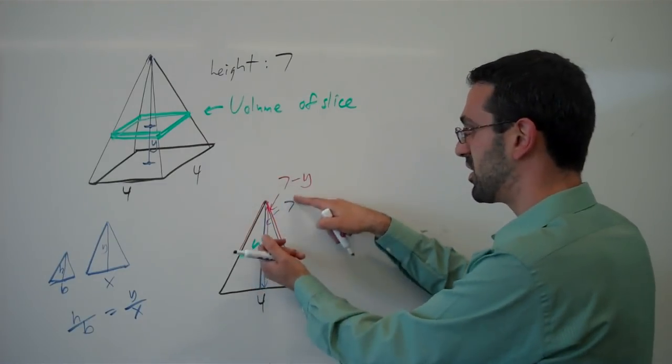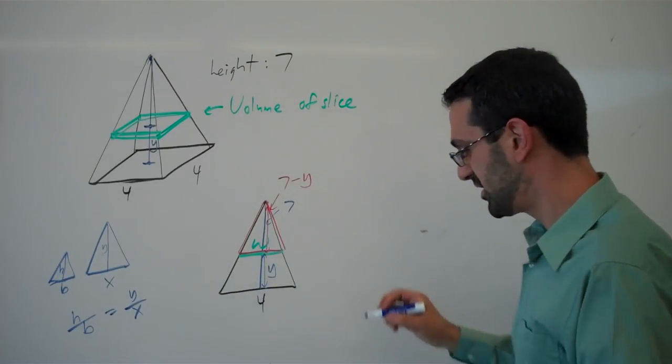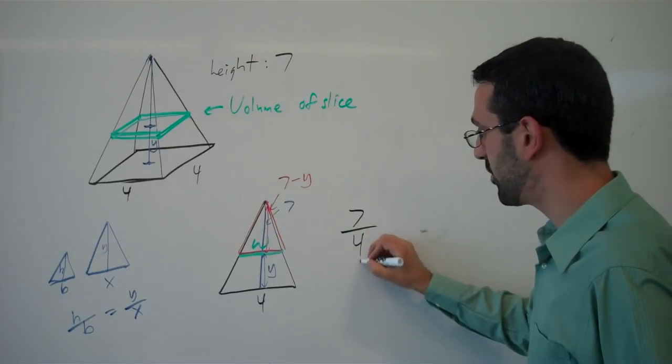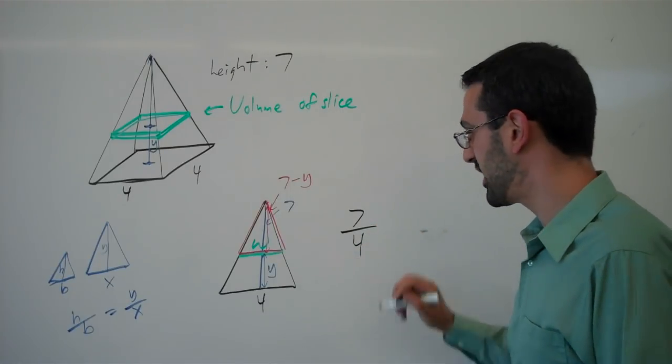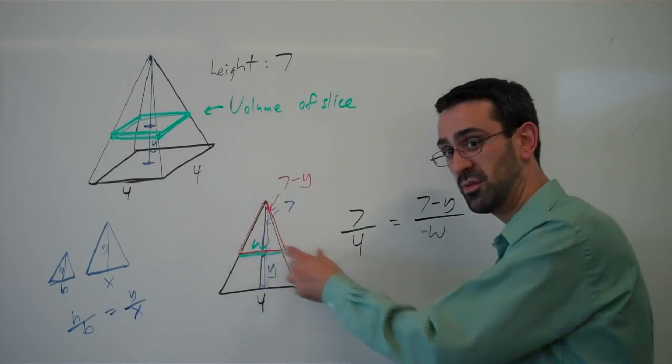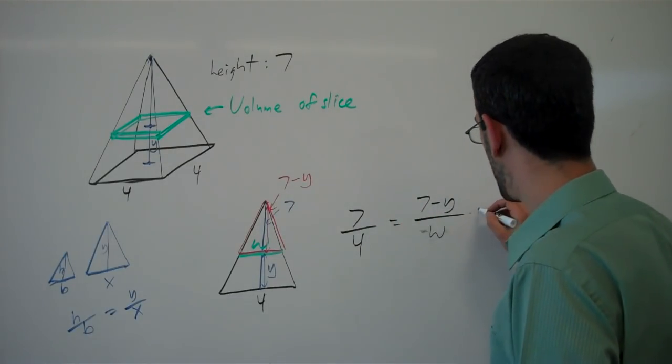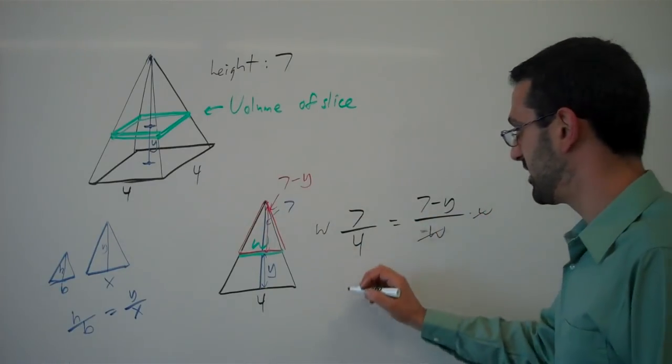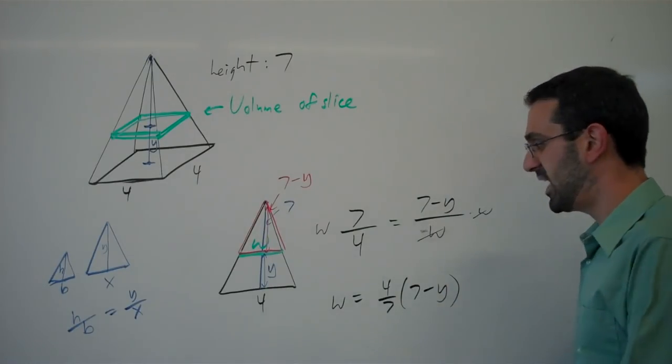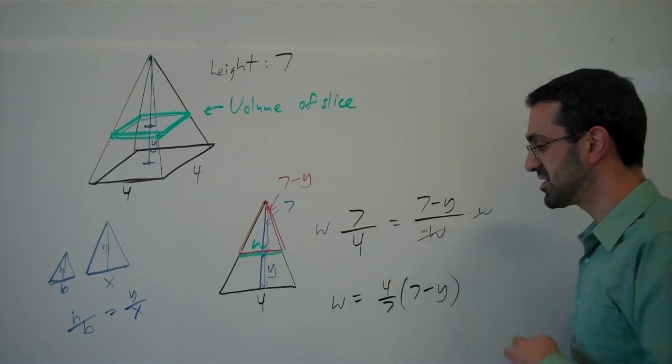So for the big triangle, the big triangle has a height of seven and a width of four. The small triangle has a height of seven minus y and a width of w. And now we can solve this for w. So I can multiply by w on both sides and then multiply by four-sevenths on both sides. And the width of my slice is going to be four-sevenths of seven minus y.